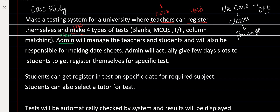Now 'admin' — admin is another noun, so I just identified noun number two. Admin will manage the teachers and students. Admin is going to manage certain things — he's going to manage teachers, which we already identified, and students. So right now I'm identifying another noun, which is 'student' — that's my third noun. Admin will also be responsible for making the date sheet.